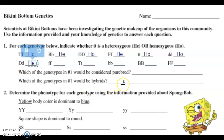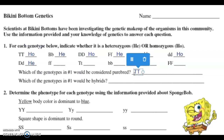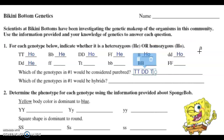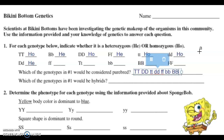It says which of the genotypes in number one would be considered purebred? Purebred is going to be the same thing as homozygous, so any of them that are homozygous would be purebred. Big T big T would be purebred, big D big D would be purebred. Little T little T, little D little D, and little F little F would all be purebred recessive. Little B little B is purebred recessive, big B big B is purebred dominant, and big F big F would be purebred dominant.